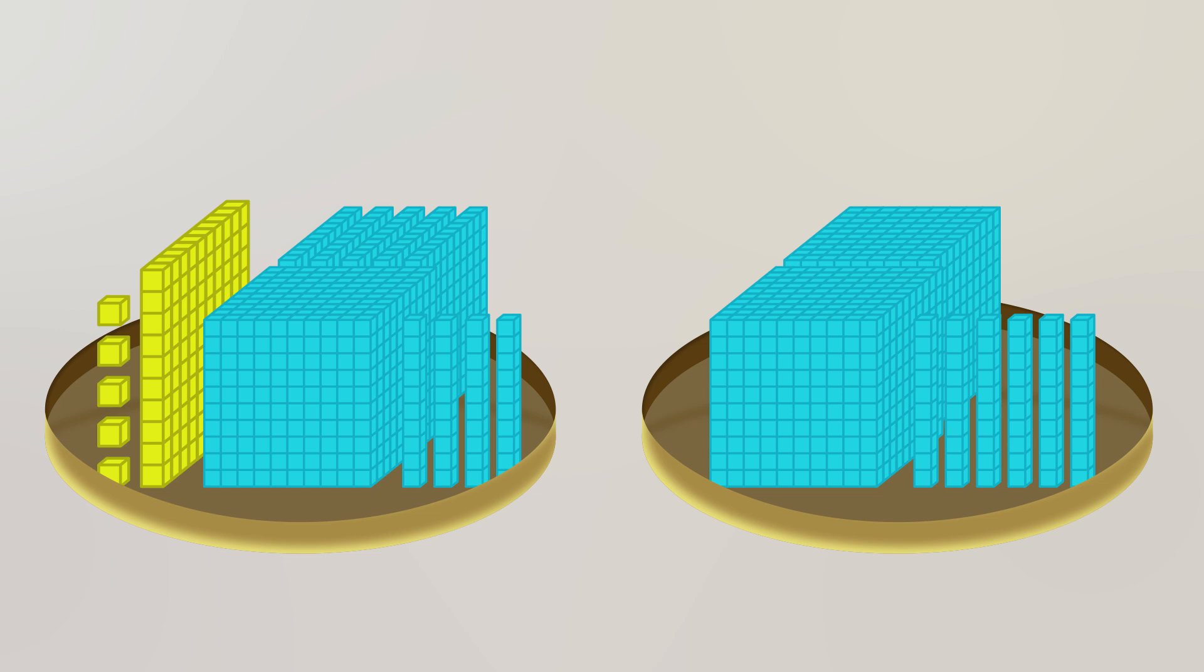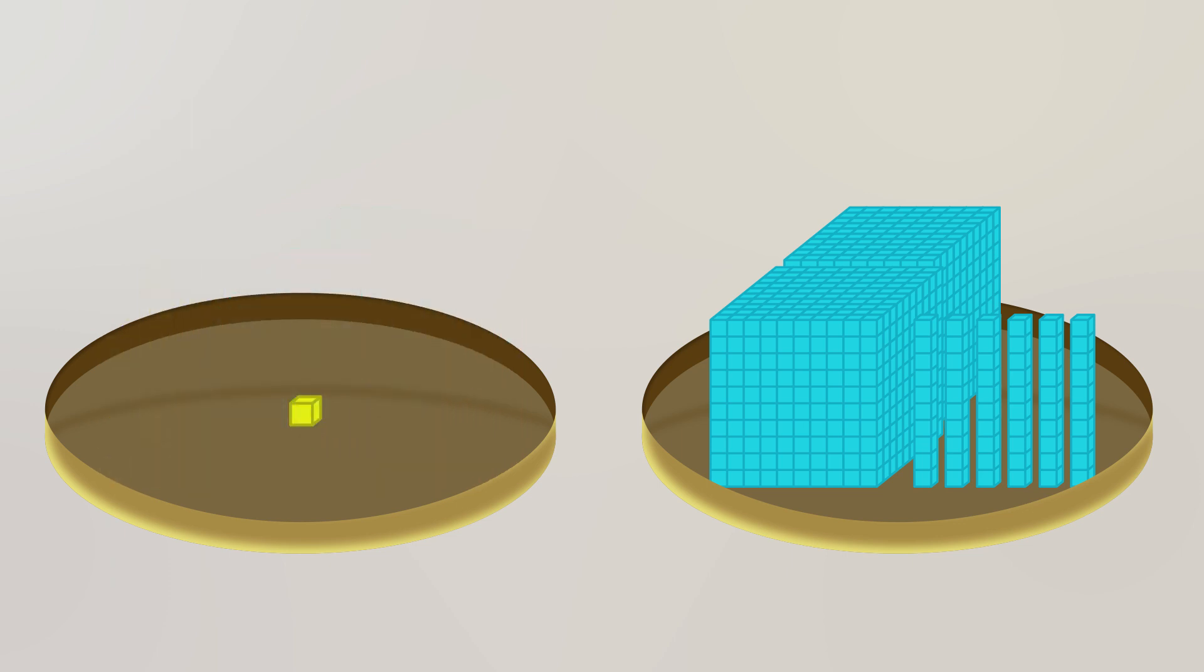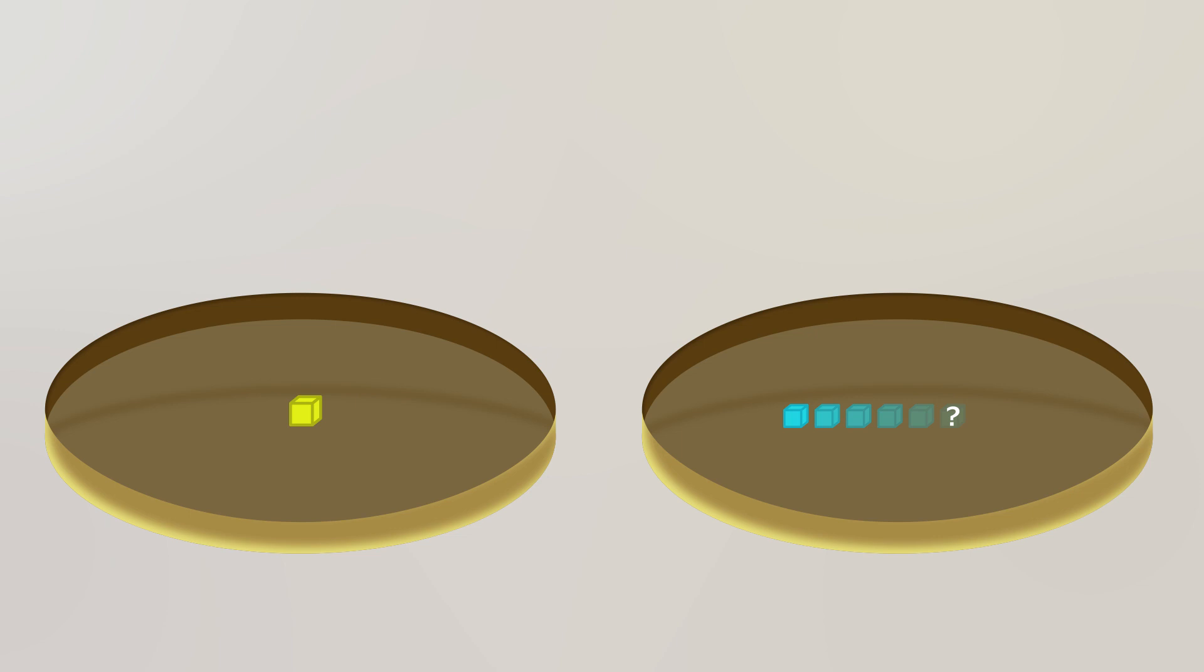Whatever X is, the expression 105X means that we have 105 of them. If we can get X all by itself on one pan and nothing but ones blocks on the other, then we will know exactly how much X weighs.